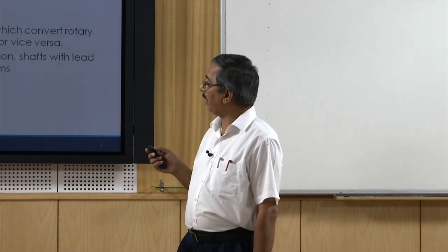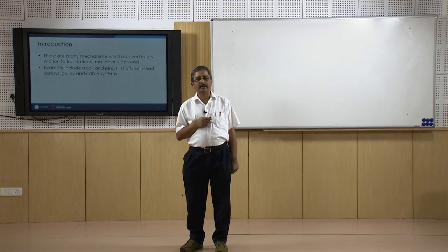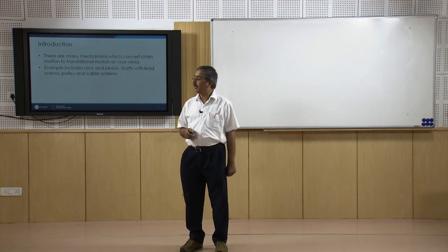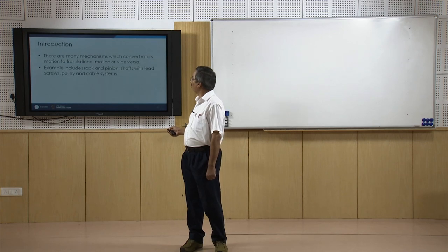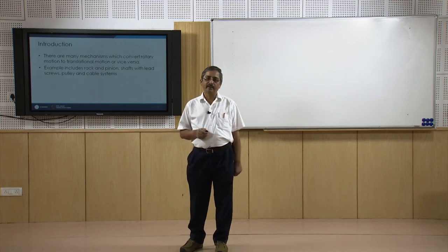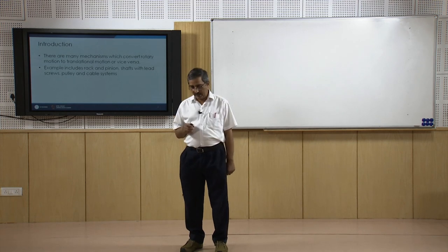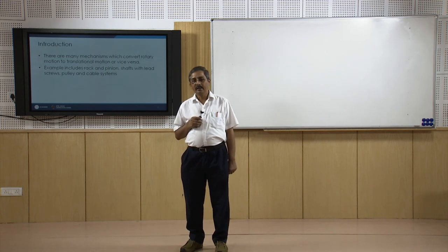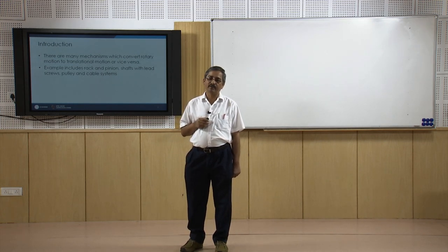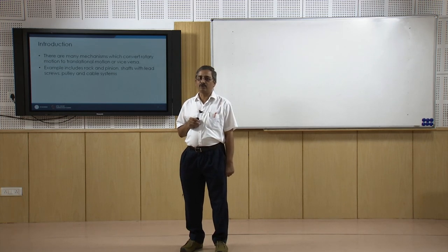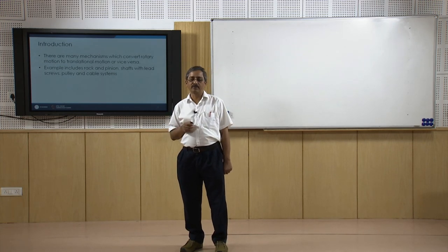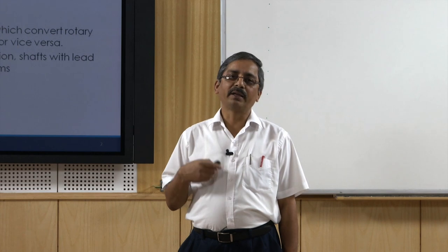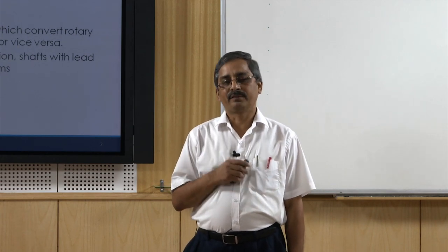Here we will look at two basic models: first, the rack and pinion system, and second, the pulley and cable system — how to model each. I want to emphasize that since we have already covered bond graph modeling of dynamic systems, try to correlate what I discuss here with the respective bond graph model, as that will give you a better feel for system modeling.